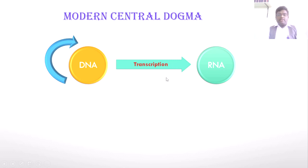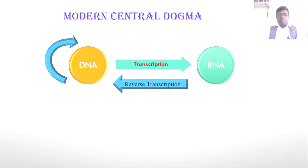By the process of transcription, DNA is converted into RNA molecules. After the discovery of viruses, the world learned that RNA can also be converted back into DNA by the reverse process of transcription — reverse transcription — using the enzyme reverse transcriptase. This study was first carried out by Temin, and hence it is also called Teminism.